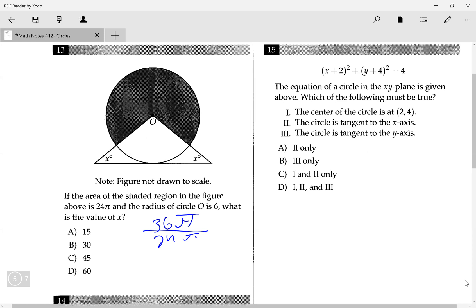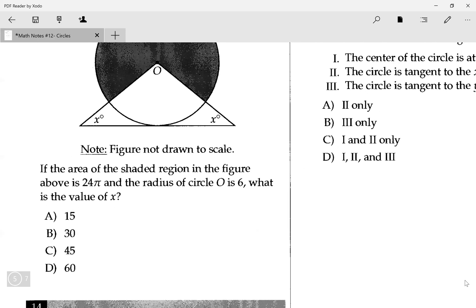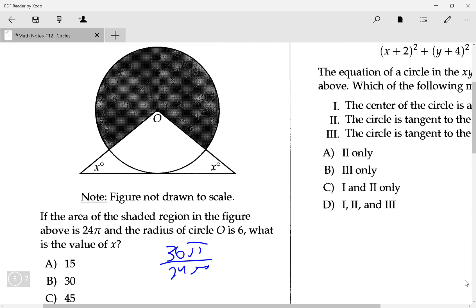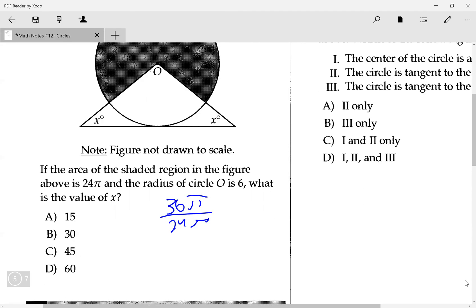Sorry, that was my ringtone. So like I said, we have the overall area of the circle is going to be 36π, and if we divide it by 24π to find out what the proportion is of the shaded region...